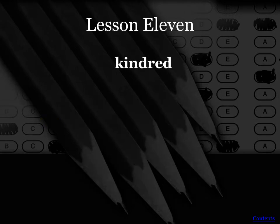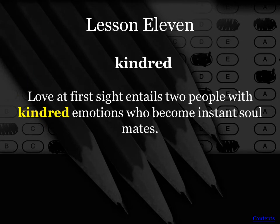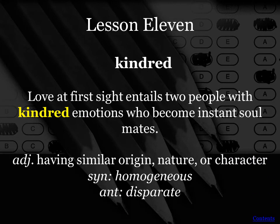Our next word is kindred. This is another adjective — kind of an old-fashioned word. Love at first sight, talking about that with Romeo and Juliet, entails two people with kindred emotions, so kindred describes the type of emotion, who become instant soulmates. Soulmate is your clue here. If you have a kindred attachment to someone, you feel like you have a similar origin — you connect with each other, you have a similar nature, a similar character.